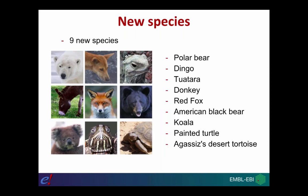There are also nine new species added to the latest Ensembl release: polar bear, dingo, tuatara, donkey, red fox, American black bear, koala, painted turtle, and desert tortoise. You can access all of the data for these nine species through Ensembl just as you would for any other species — we have the genome sequence, the gene annotation, as well as comparative analyses.